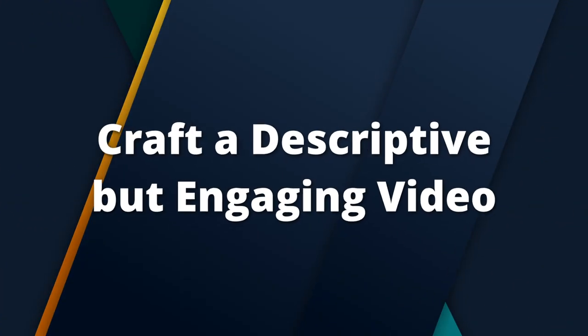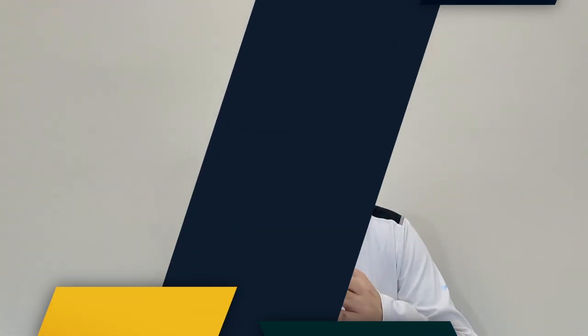Five, craft an engaging video description. Now let's talk about your video description. This is your chance to explain your video in more detail and give viewers and the YouTube algorithm more context about your content. Start with a short, engaging intro that sums up what your video is about, then use the rest of the space to add keywords, links, and a call to action.